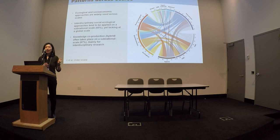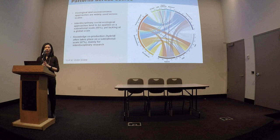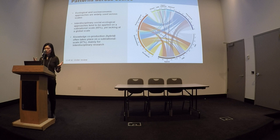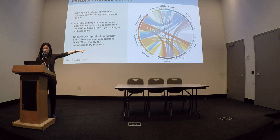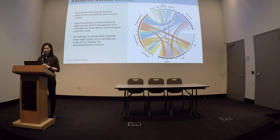We then explored the patterns and gaps across scales by connecting all the components to each other. I want to highlight three important messages. First, ecological and socioeconomic approaches have been widely used across scales, implying there's a universal concern about ecological and socioeconomic conditions. However, there is an uneven distribution of social approaches across scales — the sociological approaches tend to be used at a subnational scale, while at a relatively larger scale such as the global scale, there is no research combining social and ecological components in the assessment.